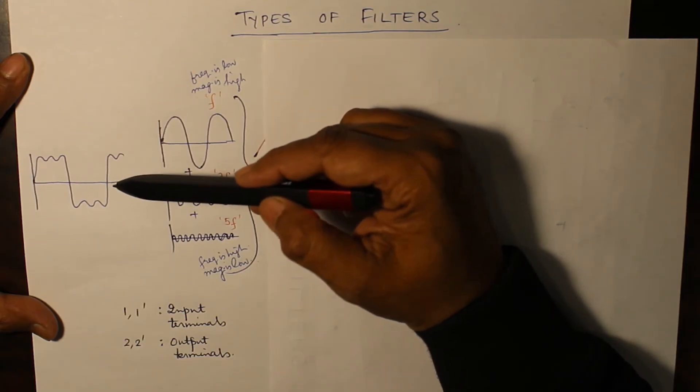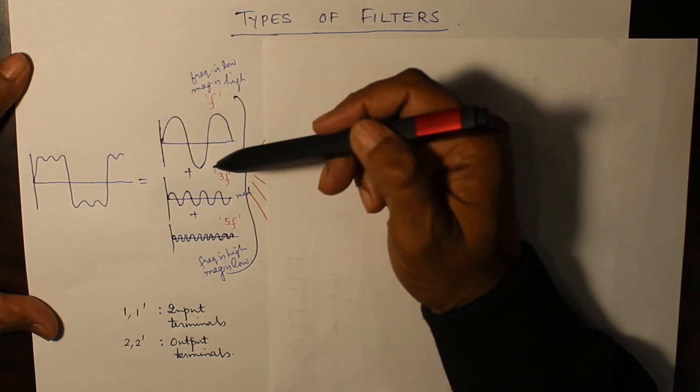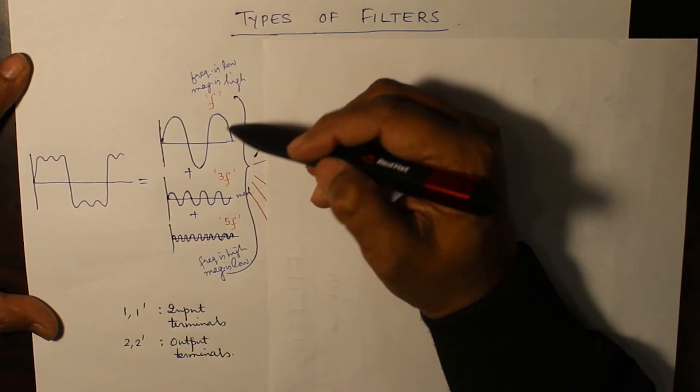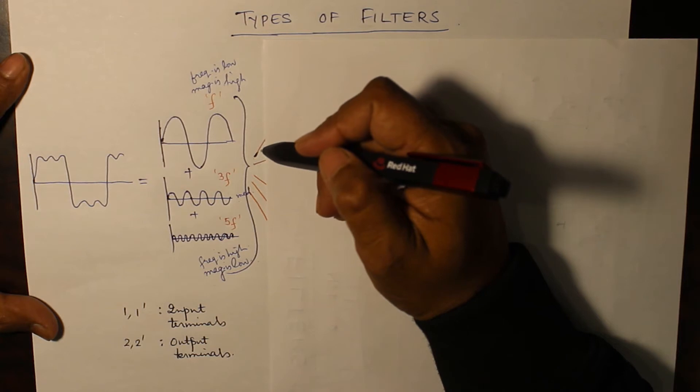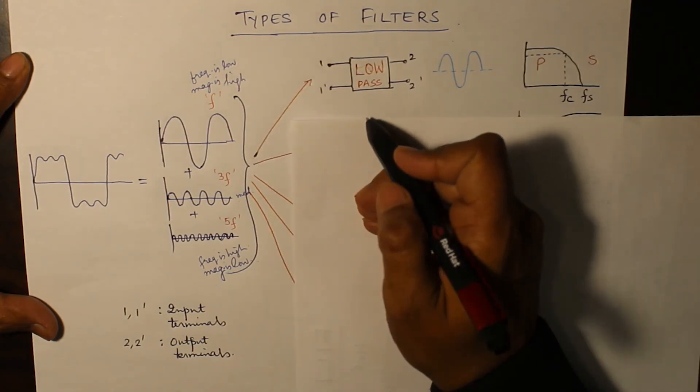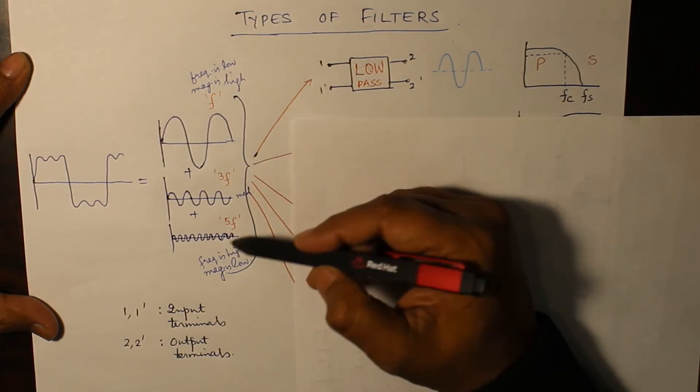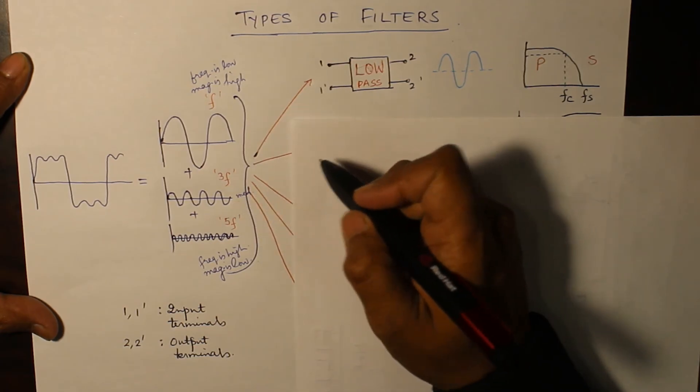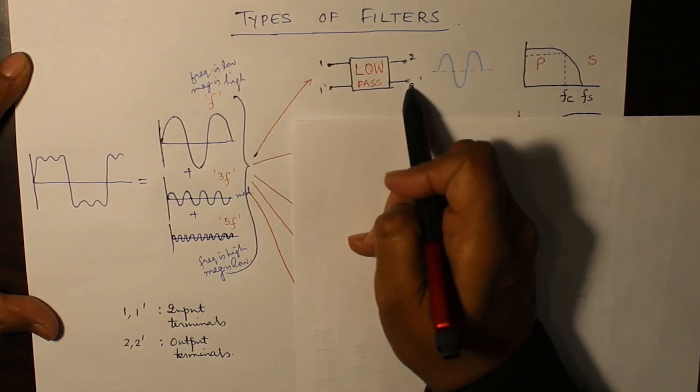Now if this waveform is passed through various filters, what are the components which are left, what are the components which pass through? We apply this to different networks and see how the magnitude is changing. First one is low pass filter. So low pass filter means the low frequency passes and the high frequencies are rejected.